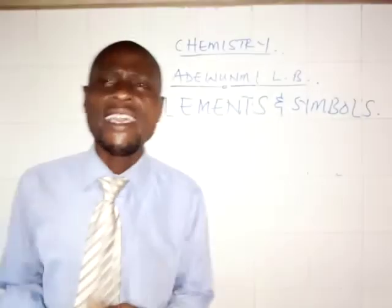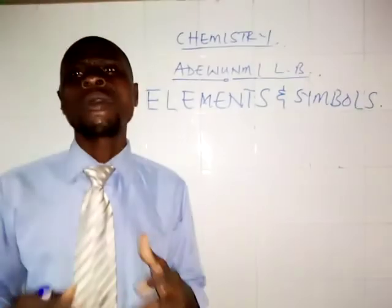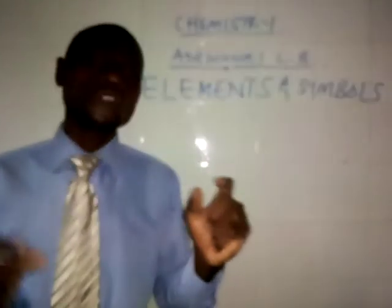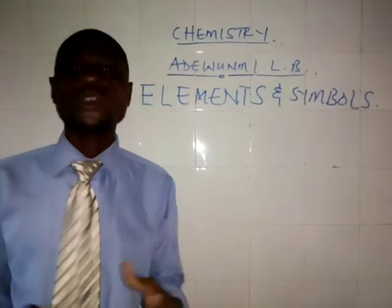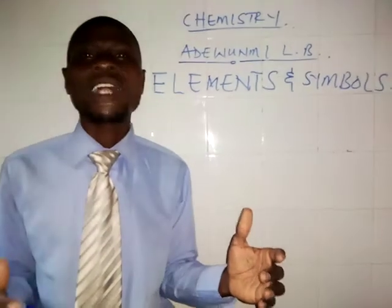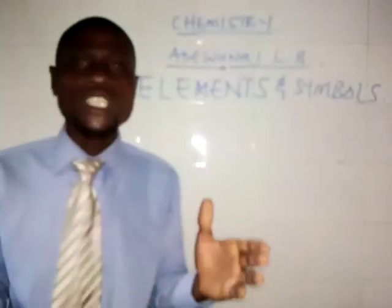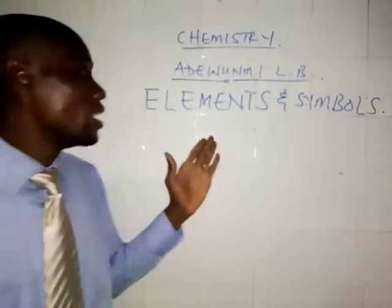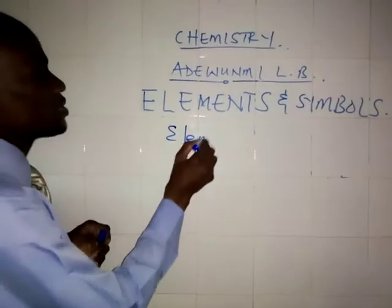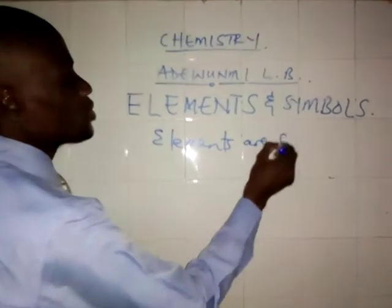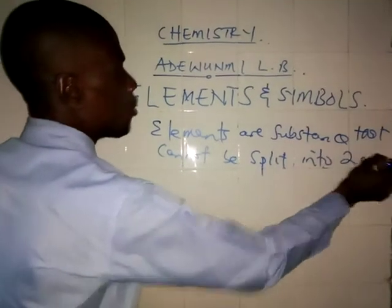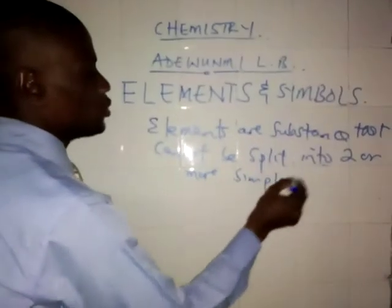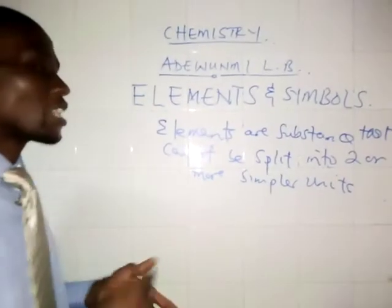Now, what do we call elements? We all know that chemistry is about composition, property, and uses of matter. Element is one of the chemical classifications of matter — other ones being compound and mixture. Element is a substance which cannot be split into two or more simpler units.